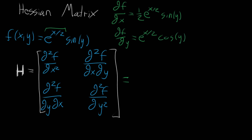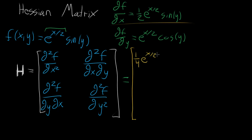These first partial derivatives won't be included in the Hessian itself, but we use them to fill in the matrix. The upper-left component is the second partial derivative with respect to x, then x again — bringing down another half gives one fourth times e to the x halves times sine of y. The mixed partial where we do it with respect to x then y: the one half e to the x halves looks like a constant, and the derivative of sine of y becomes cosine of y, giving one half e to the x halves times cosine of y.